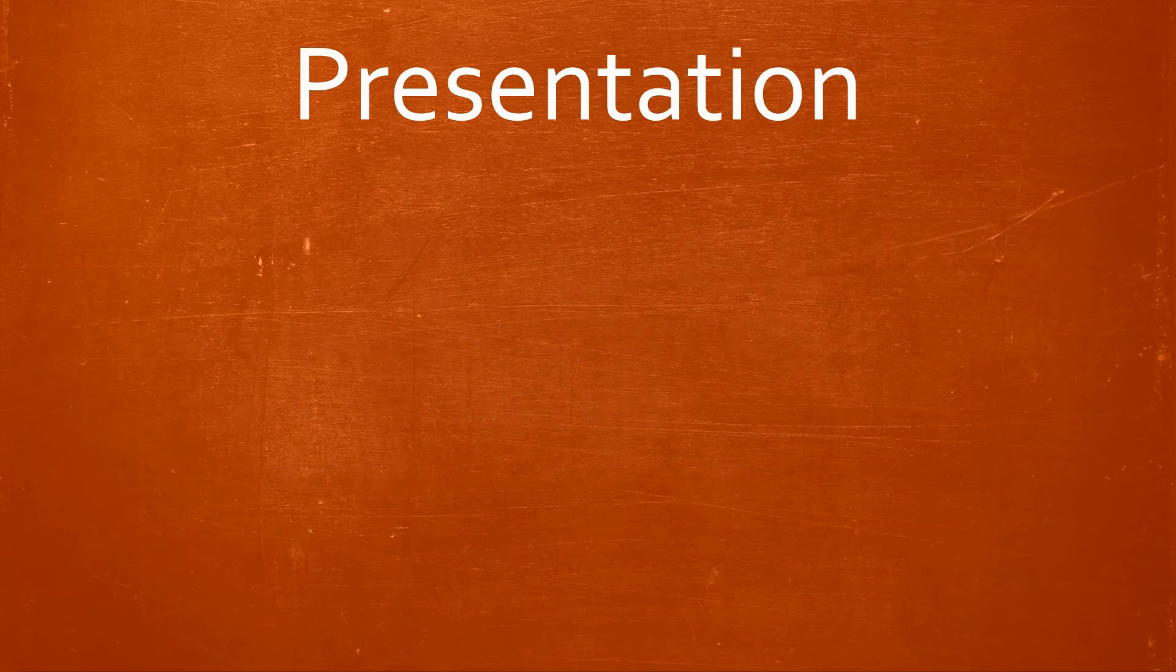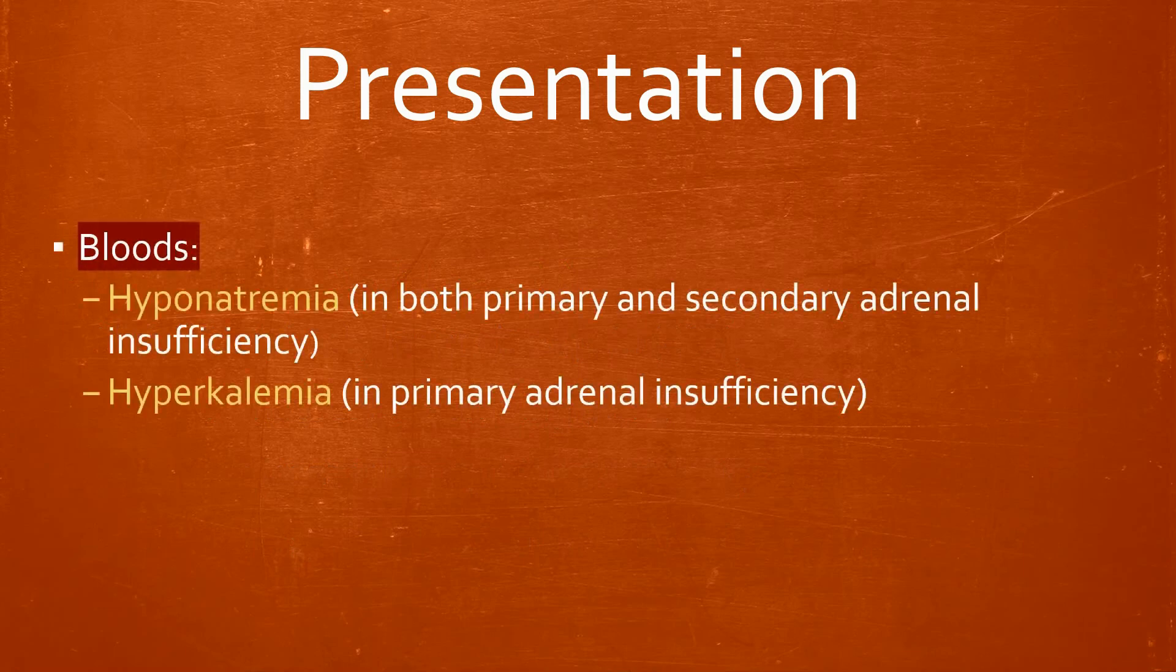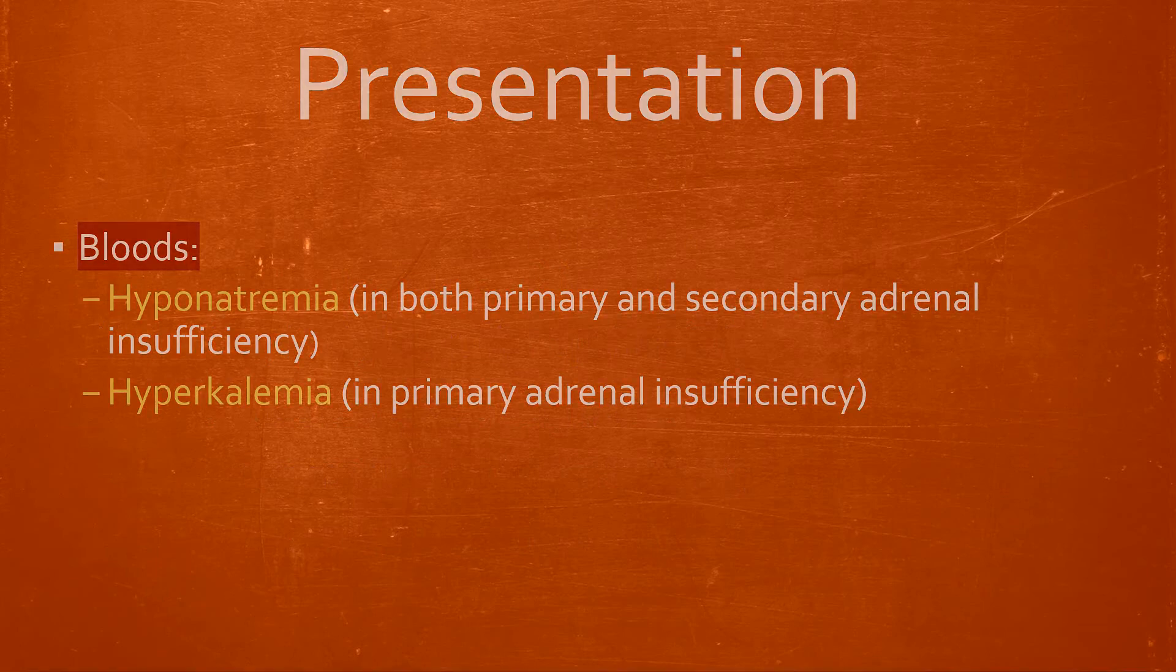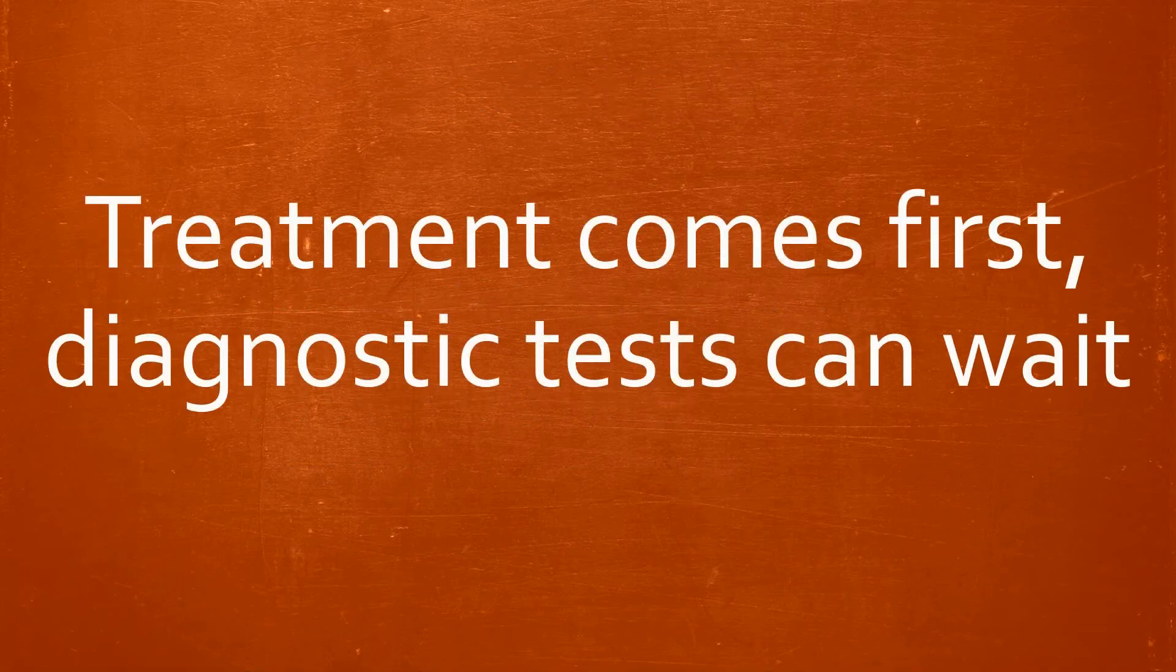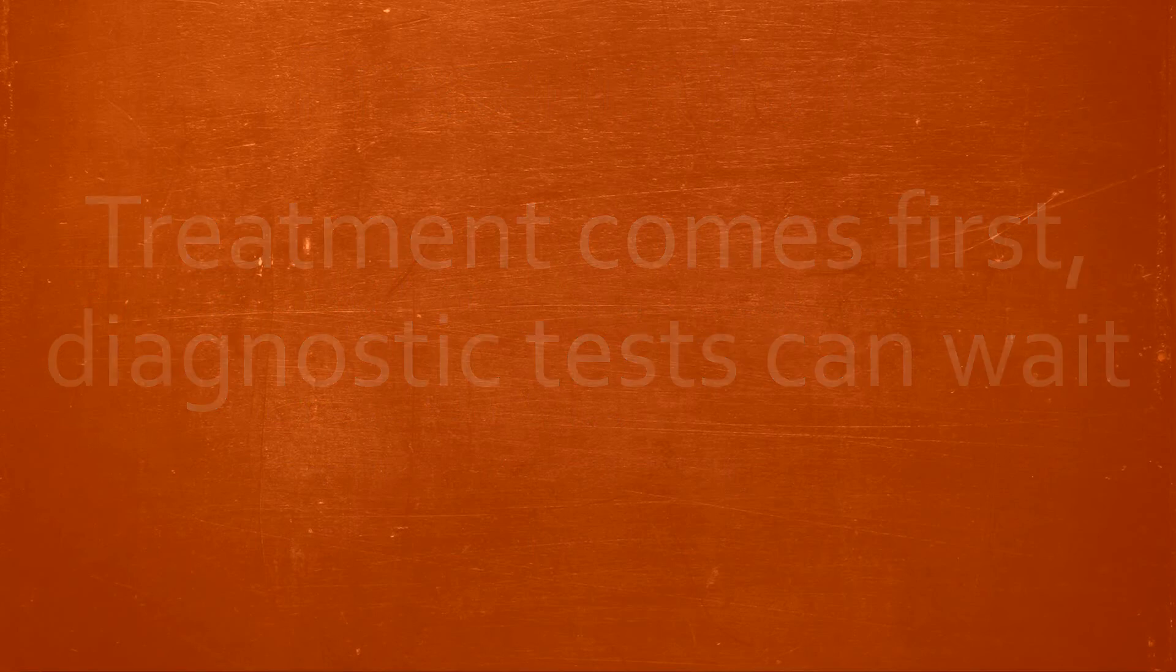Bloods typically show hyponatremia in both primary and secondary adrenal insufficiency, however, hyperkalemia is reserved in Addison's disease. Always remember that treatment in this instance comes first. Diagnostic tests can wait.